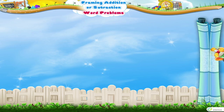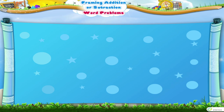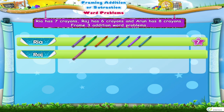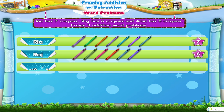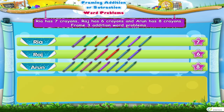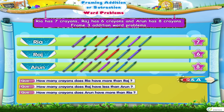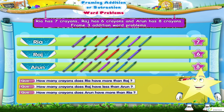Now frame three subtraction word problems for this information. Ria has seven crayons, Raj has six crayons and Arun has eight crayons. How many crayons does Ria have more than Raj? How many crayons does Raj have less than Arun? How many crayons does Arun have more than Ria? Good. So today you have learned how to frame word problems of addition as well as subtraction. Bye.